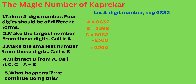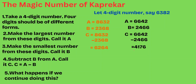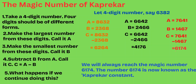What happens if we continue doing this? Now let us take 6,264. The largest number we can make is 6,642 and the smallest is 2,466. The difference is 4,176. Taking 4,176: the largest is 7,641 and the smallest is 1,467. The difference C = 6,174. We observe that 6,174 keeps appearing — this is the magic number. If we keep repeating, we will always reach 6,174. The number 6,174 is now known as the Kaprekar constant.